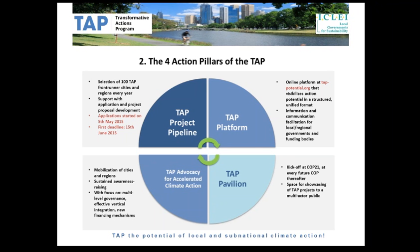The third pillar is the TAP pavilion — the physical component of the program. This is the space where selected TAP projects will be presented to national delegations, international donors, financing agencies, and others from both public and private sectors during the COP. The first TAP pavilion, TAP 2015, will be organized at COP21.